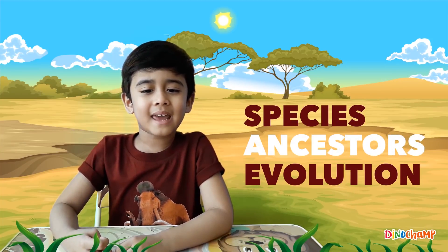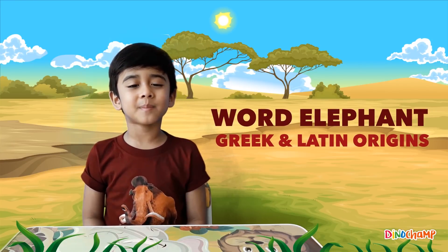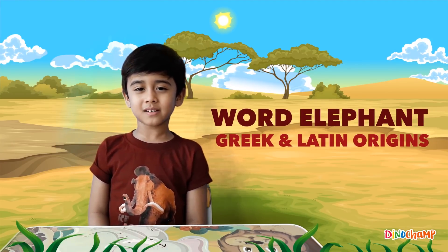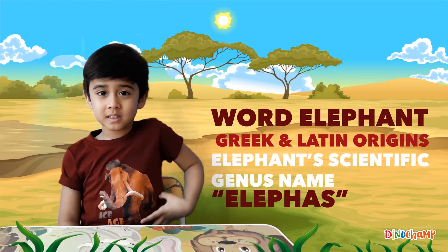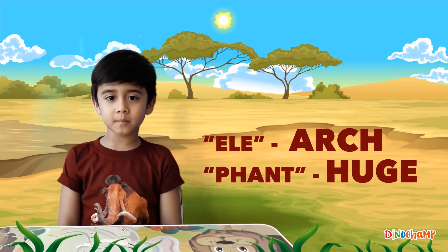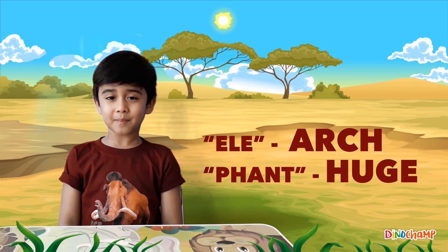Let's explore the species of elephants, the ancestors of elephants, and the evolution. So let's see where the word 'elephant' comes from. The word comes from Greek and Latin origins. The elephant's scientific genus is Elephas, and in Greek linguistics, Elephas represents an antlered beast or stag. The root of the word is divided into 'ele,' which means arch, and 'phas,' which means youth.